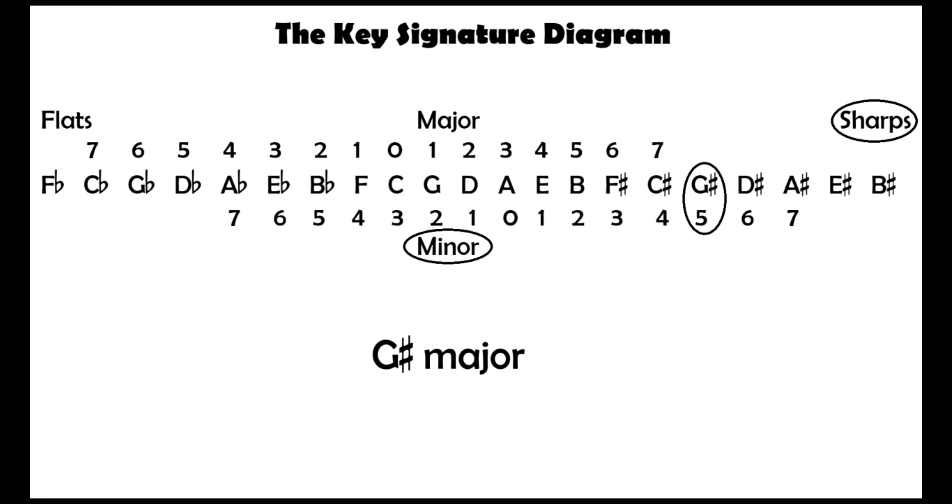So G sharp minor has 5 sharps. The order of the sharps tells us that these 5 sharps are F, C, G, D and A.